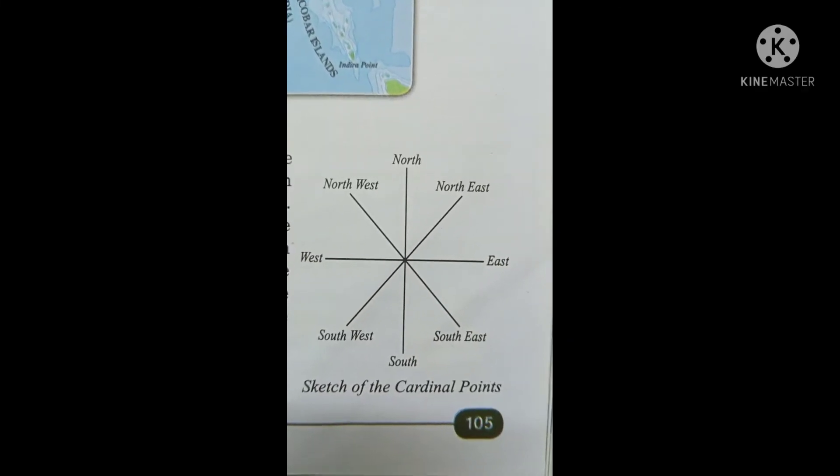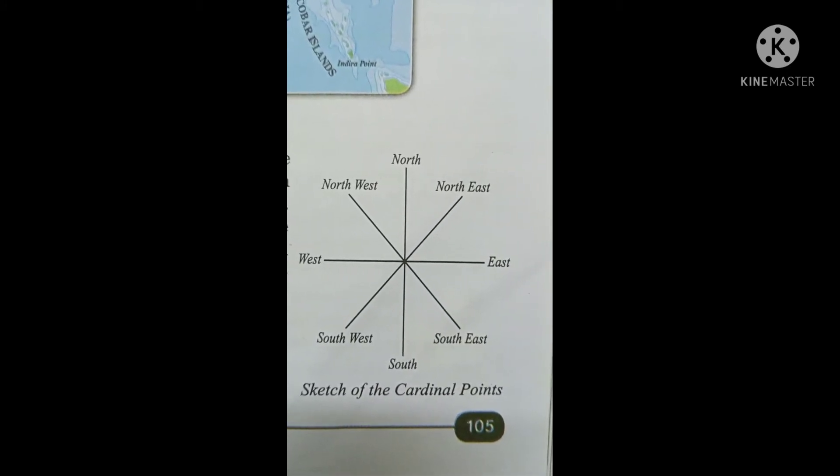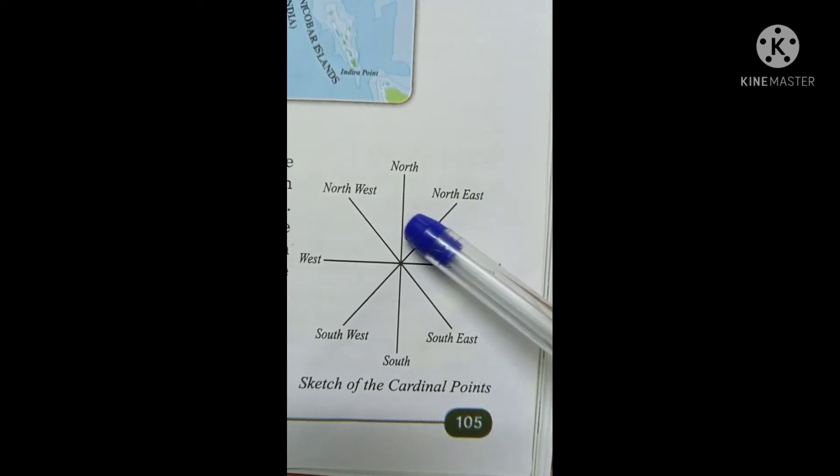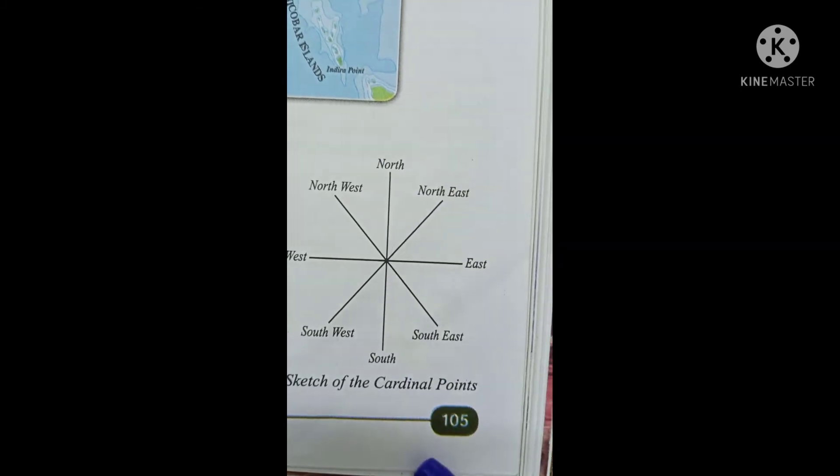The first component is directions. Direction is very important to read and understand maps. In all maps, the top is north, the bottom is south, the right side is east, and the left side is west. The earth rotates around its axis and has two poles, which are fixed points taken as north and south.